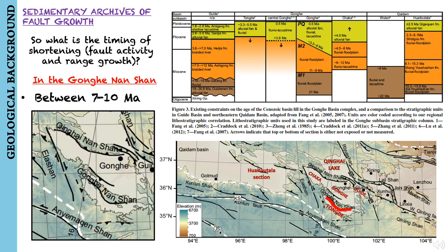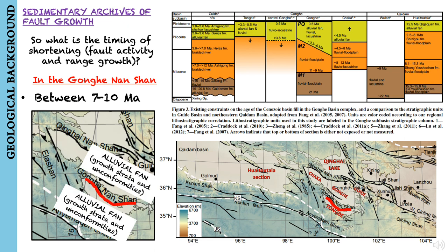Along both the southern and northern flanks of the Gonghe-Nanshan, alluvial fan deposits exhibit growth strata and progressive unconformities, indicating that growth of the range and fault activity in the Gonghe-Nanshan initiated between 7 and 10 million years ago, and persisted during accumulation of alluvial fan strata on the flanks of the range.